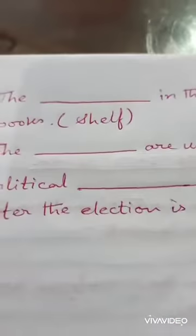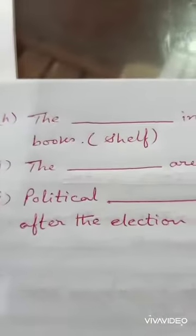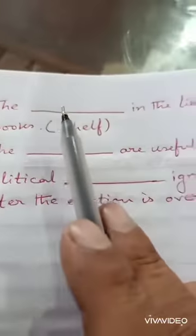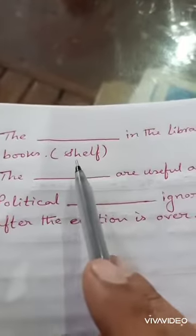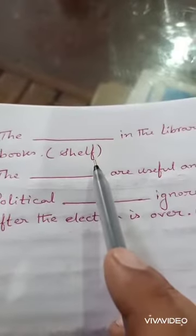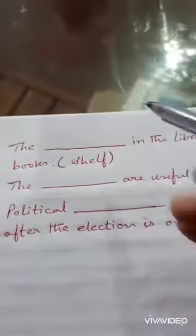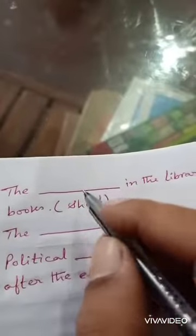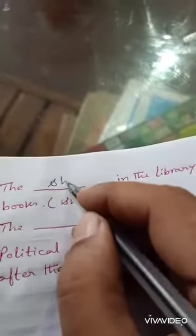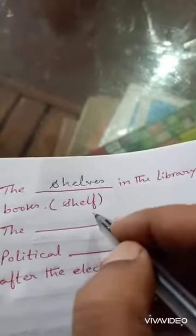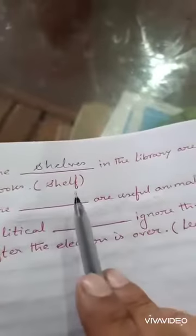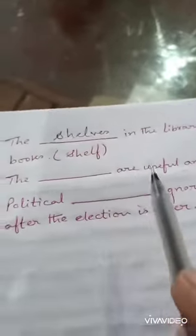Now let's go to question H: 'The dash in the library are full of books.' It is given 'shelf.' At the end it is F. So if there is F, then what do we have to add? VES. So S-H-E-L, VES. F will be omitted, and instead of 'shelf' we have to write 'shelves.'